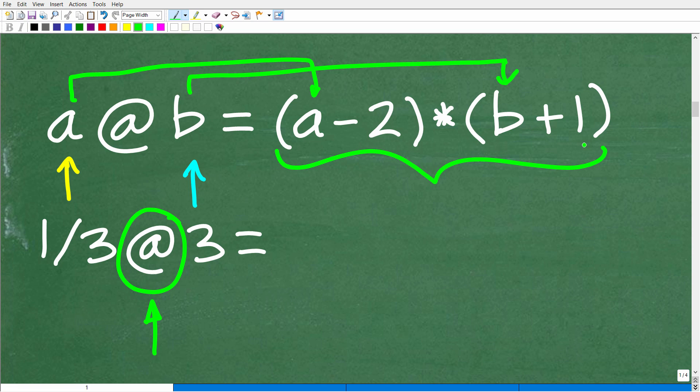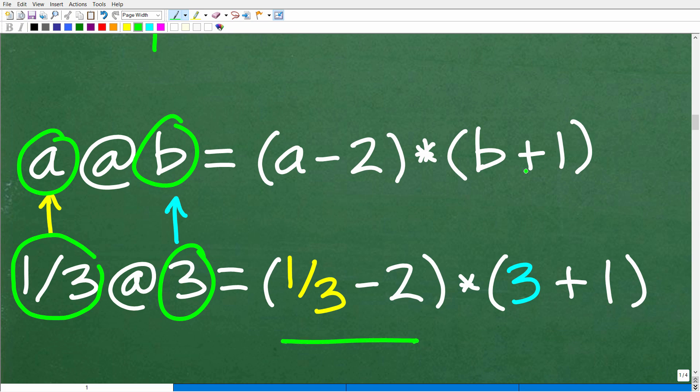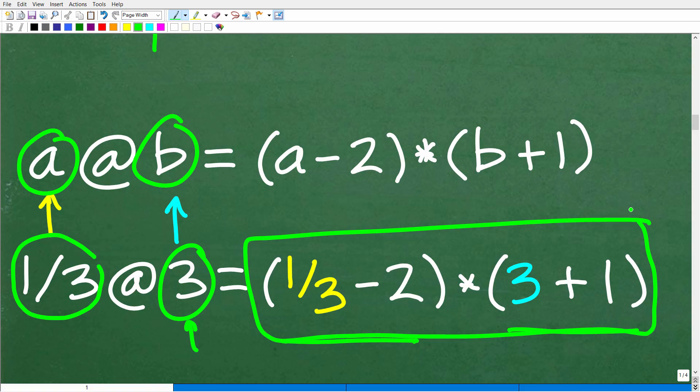Okay, so if you want to go ahead and see if you can set this up, that'd be great. But let's go ahead and take a look at it right now. So this is what you want to hopefully came up with. We have A at B, again, is equal to A minus two times B plus one. So I have one third at three. Well, this here is in the A spot, and three is in the B spot. So I'm just going to simply plug in these respective values. So if A is one third, this is A minus two, so this is going to be one third minus two times B plus one, and three is in the B spot. So this is going to be three plus one. So at this point, all I have to do is figure this out, and I will have figured out what the problem is. One third at three is equal to.